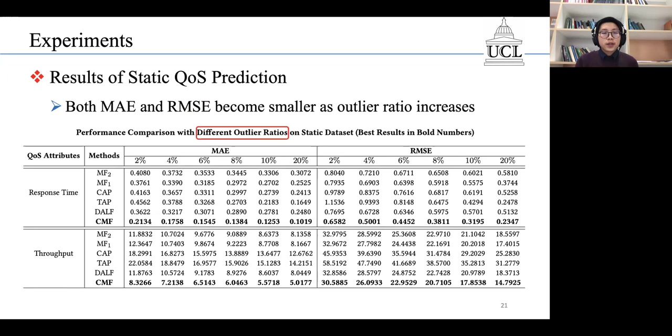Then we report the performance with different outlier ratios. We can see that our approach also demonstrates the best performance in all the cases.